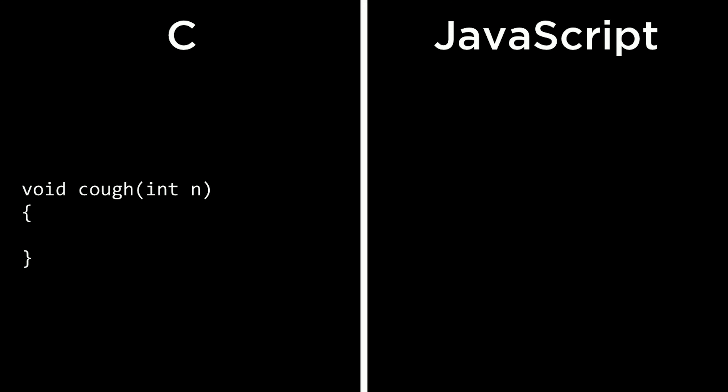In C, when we created a new function — like a cough function that took an integer n and had a return type of void — we specified both the return type and parameter type. In JavaScript it's similar, but we don't need to specify types. Rather than giving the return type before the function name, we just use the keyword function. So: function cough(n). We don't need to specify that n is an integer, just that there is an input called n.